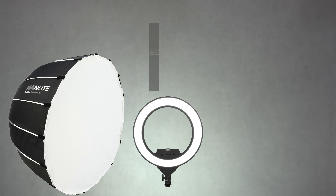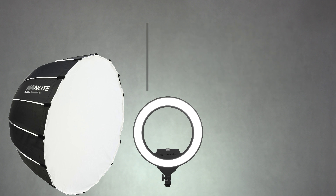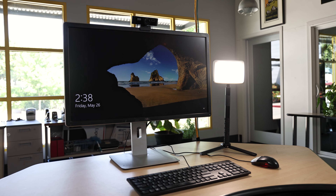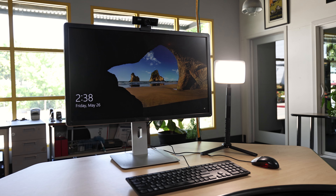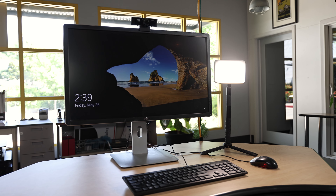If natural light is not an option, you can invest in some affordable lighting equipment. LED ring lights and softbox lights are great options that can be found at reasonable prices. These lights are easy to set up and can be adjusted to your desired brightness level.